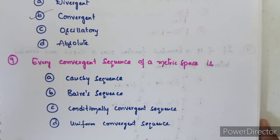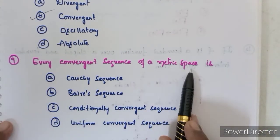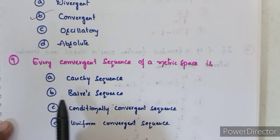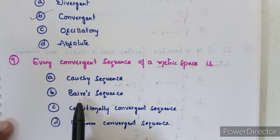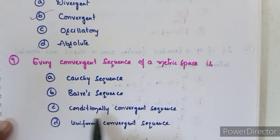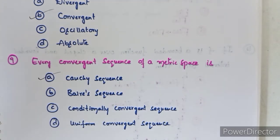Ninth question: every convergent sequence of a metric space is a — Cauchy sequence, bare sequence, conditionally convergent sequence, or uniform convergent sequence? Option A is correct: every convergent sequence of a metric space is a Cauchy sequence.